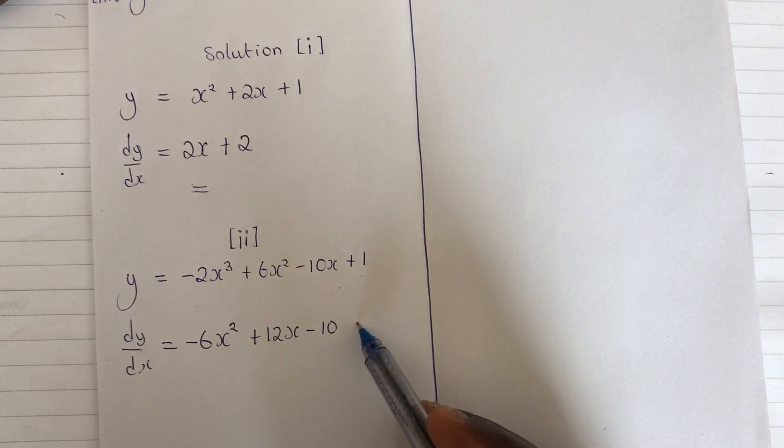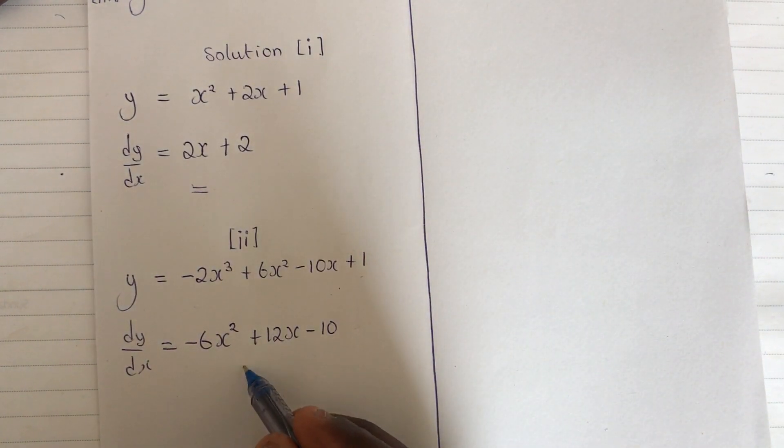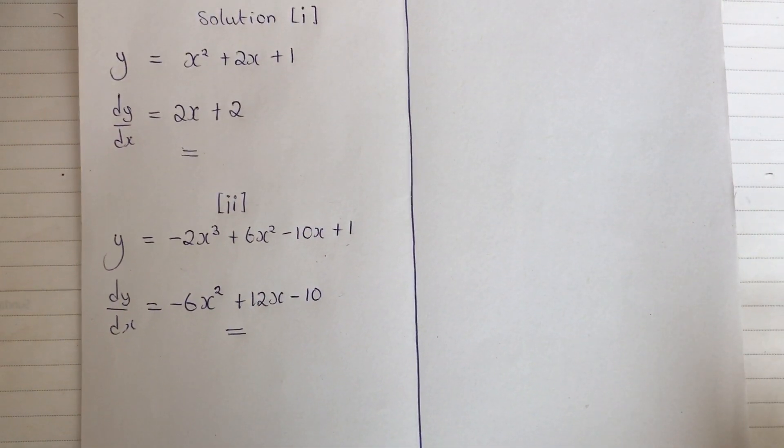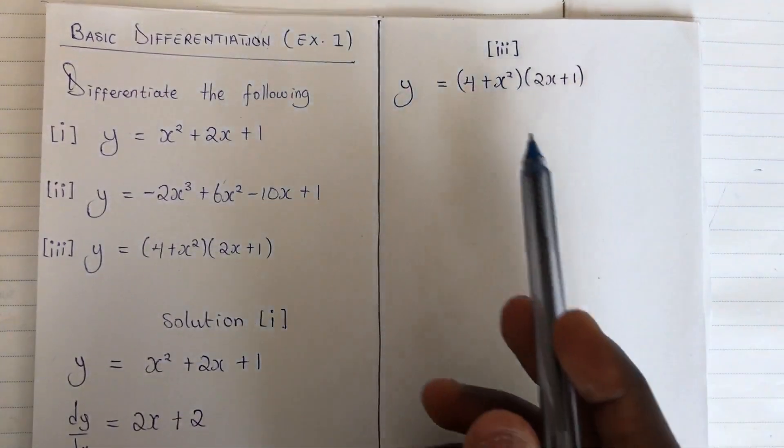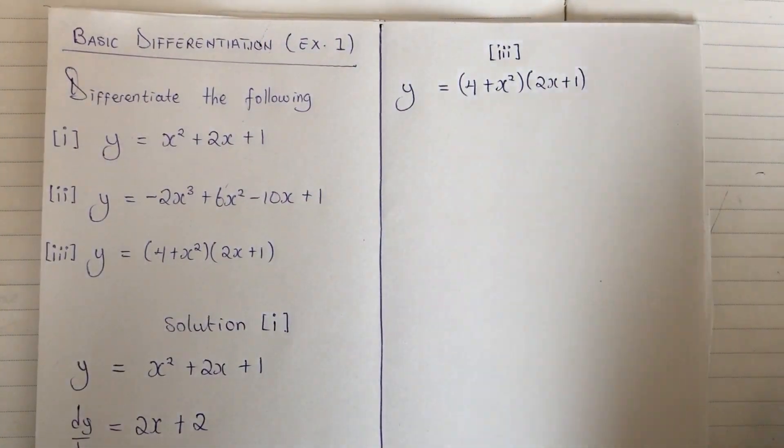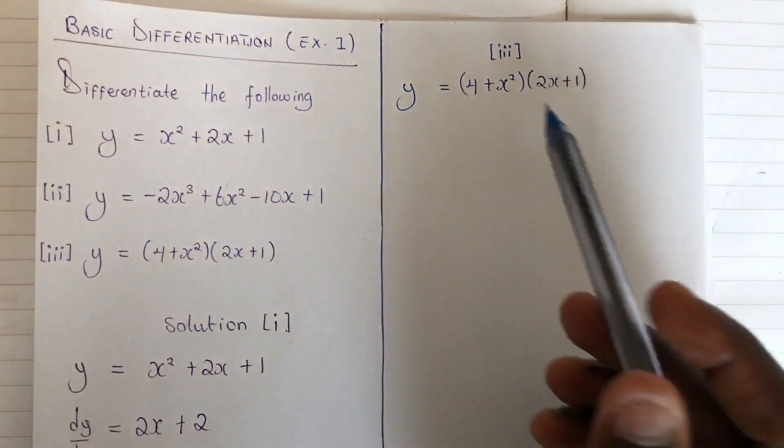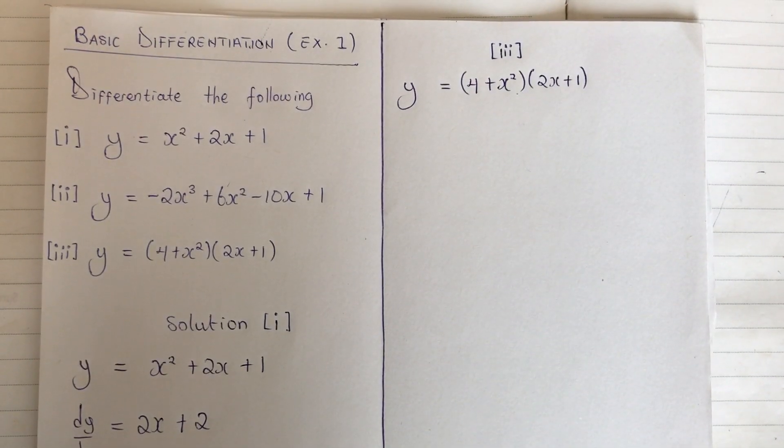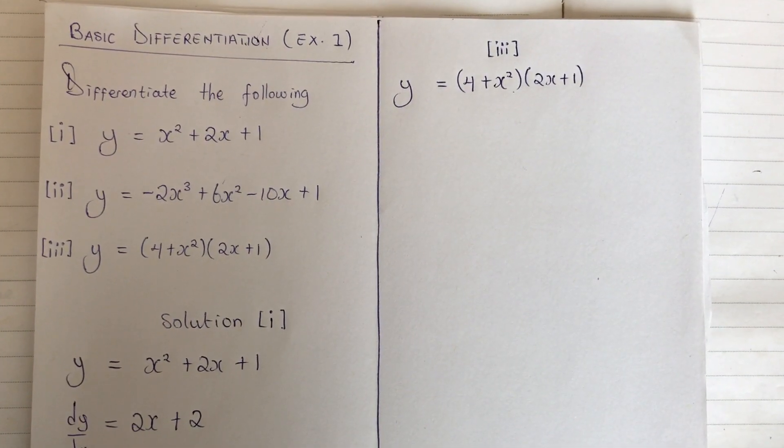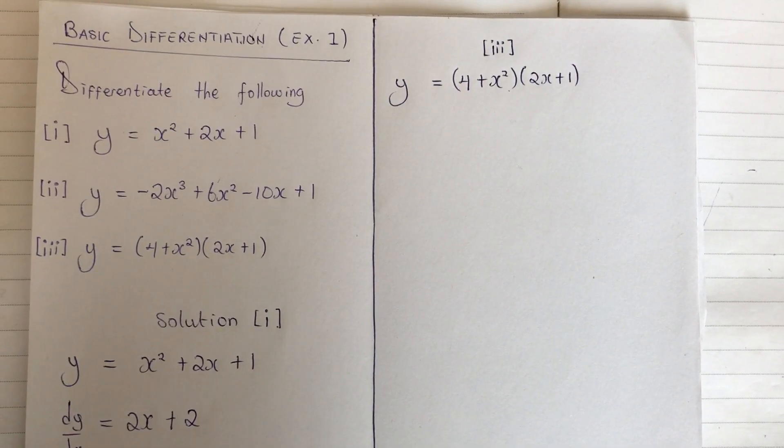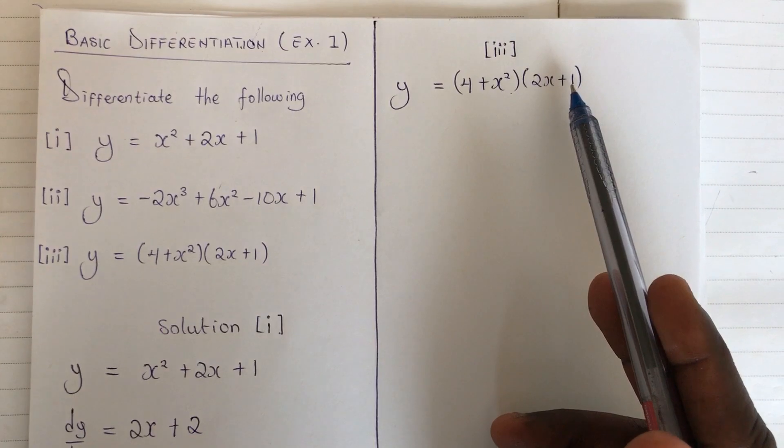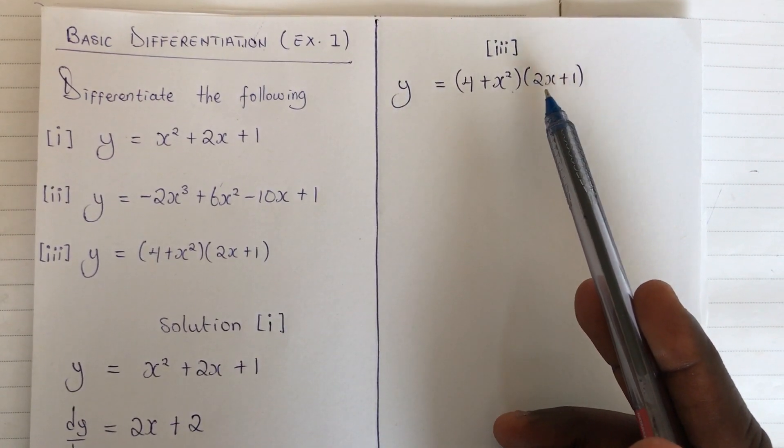Now let's move on to the third example. Now for this one, I cannot just differentiate straightforward because I have two product functions here. I just need to expand this and get one straight linear function, then I can differentiate. There is no need for me to use product rule for this example, those of you who know about product rule in differentiation.